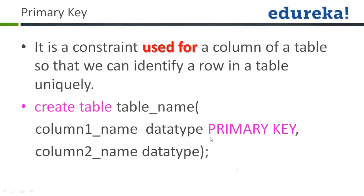For foreign key, you'll be mentioning it similarly to how you mention the primary key. For example, table_name_one — this is the table, and this column is the primary key of this table. Now in the second table, if you use the same column there, then that same column can be mentioned as foreign key, because it is the primary key of the first table.